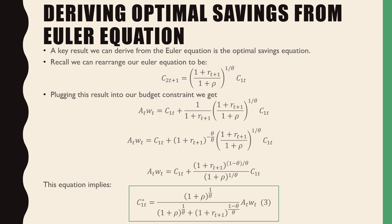A key result we can derive from the Euler equation is the optimal savings equation. Recall we can rearrange our earlier equation to be the consumption when old is equal to 1 plus rt+1 all over 1 plus ρ raised to the power of 1 over θ times the consumption when young.